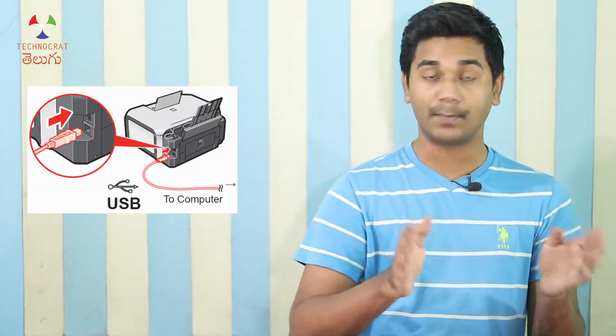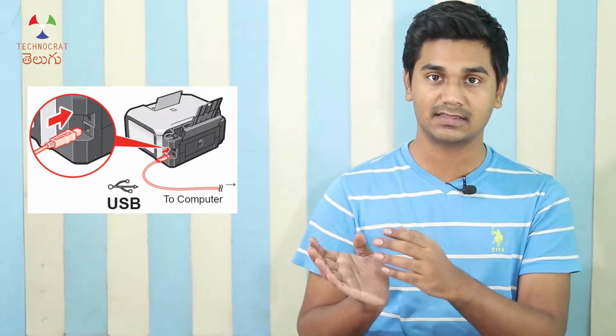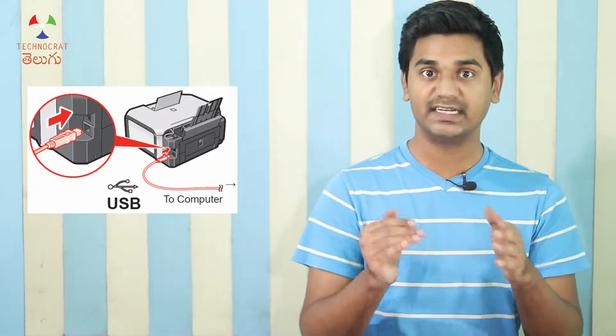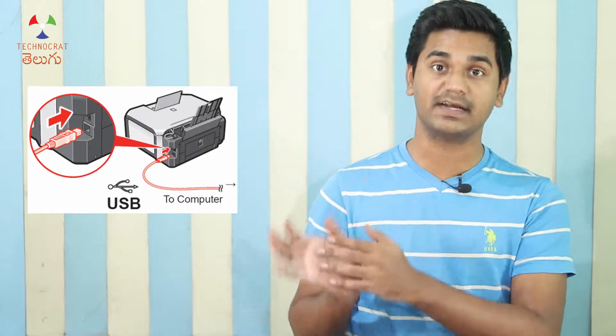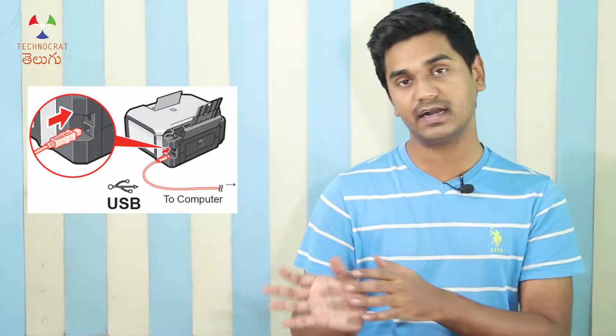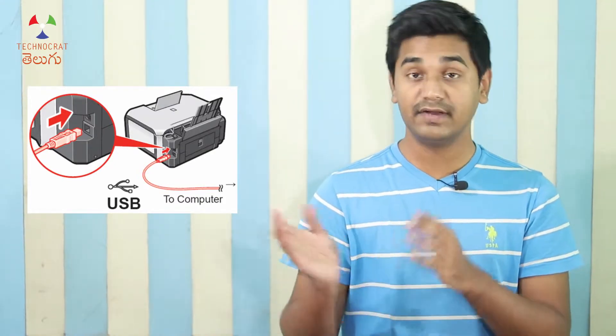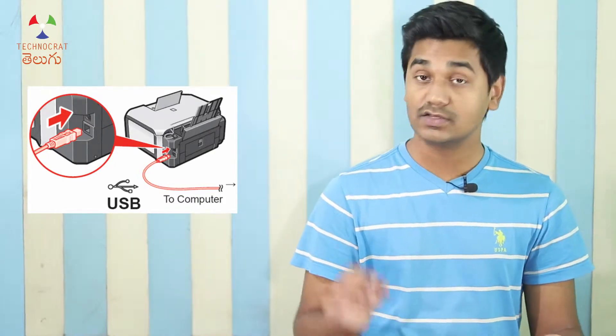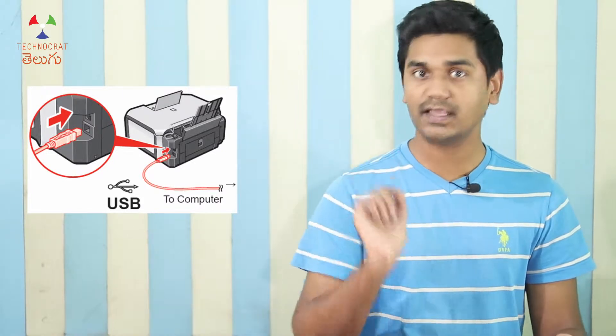USB A-type is used by upstream peripheral devices. For computer peripherals such as printers, scanners, and CD burners, we have a peripheral device connected to a laptop. So we have USB B-type ports and the cables have a connector.